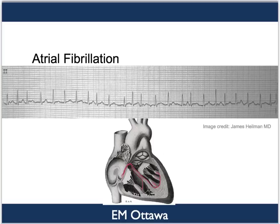Next is atrial fibrillation. In atrial fibrillation, the impulses do not come from the sinus node. Rather, they come from different foci in the atrium. Therefore, there should be no P waves. And depending on the conduction of these foci down the AV node, atrial fibrillation is irregular. It is still narrow because it originates above the AV node.